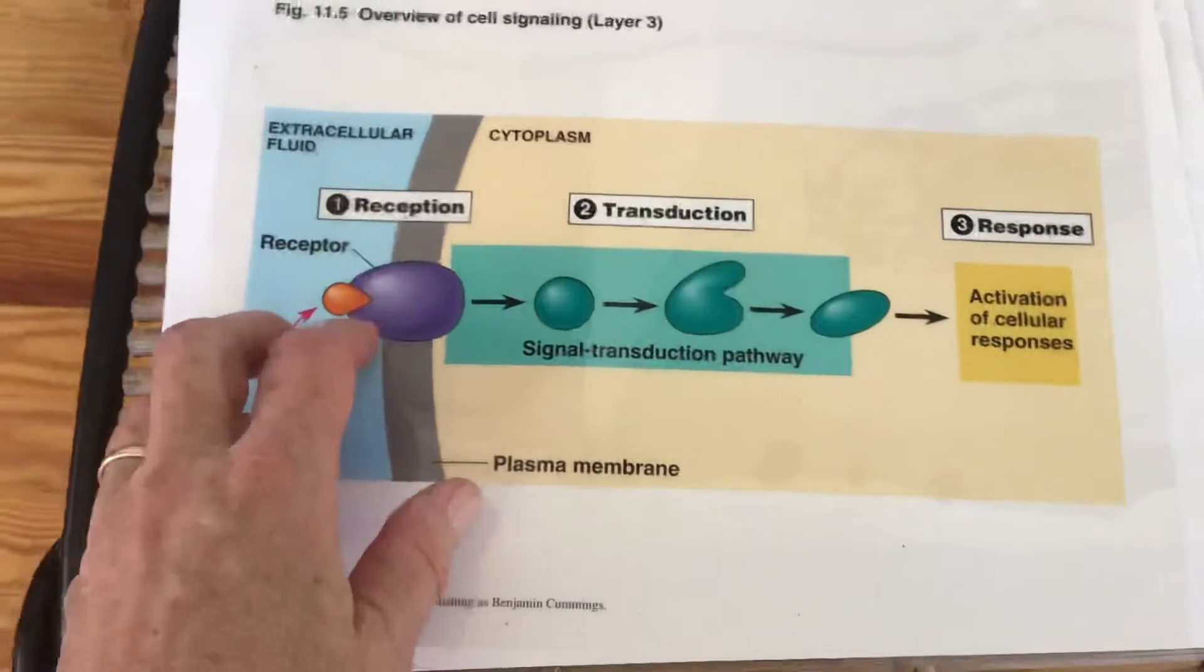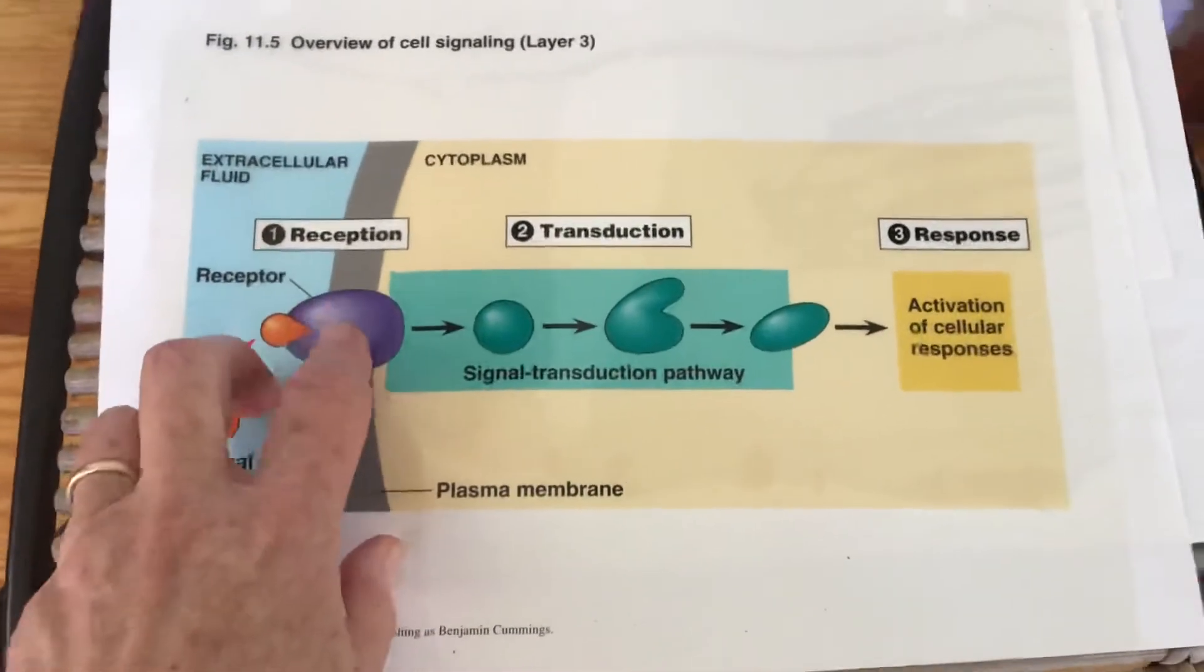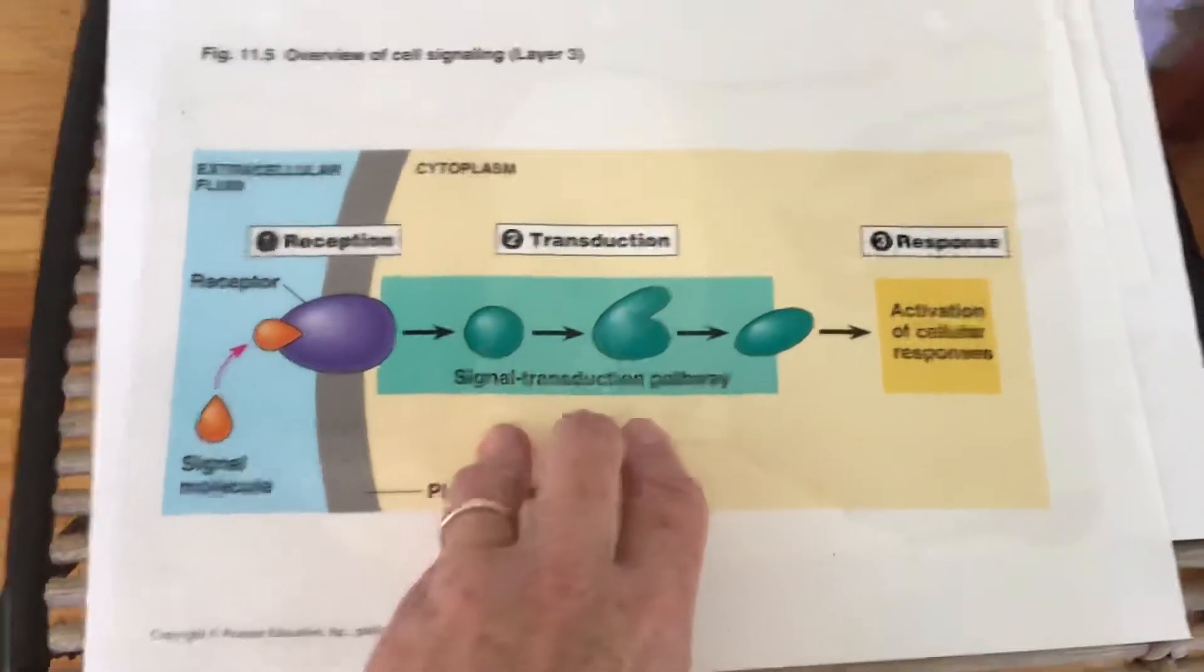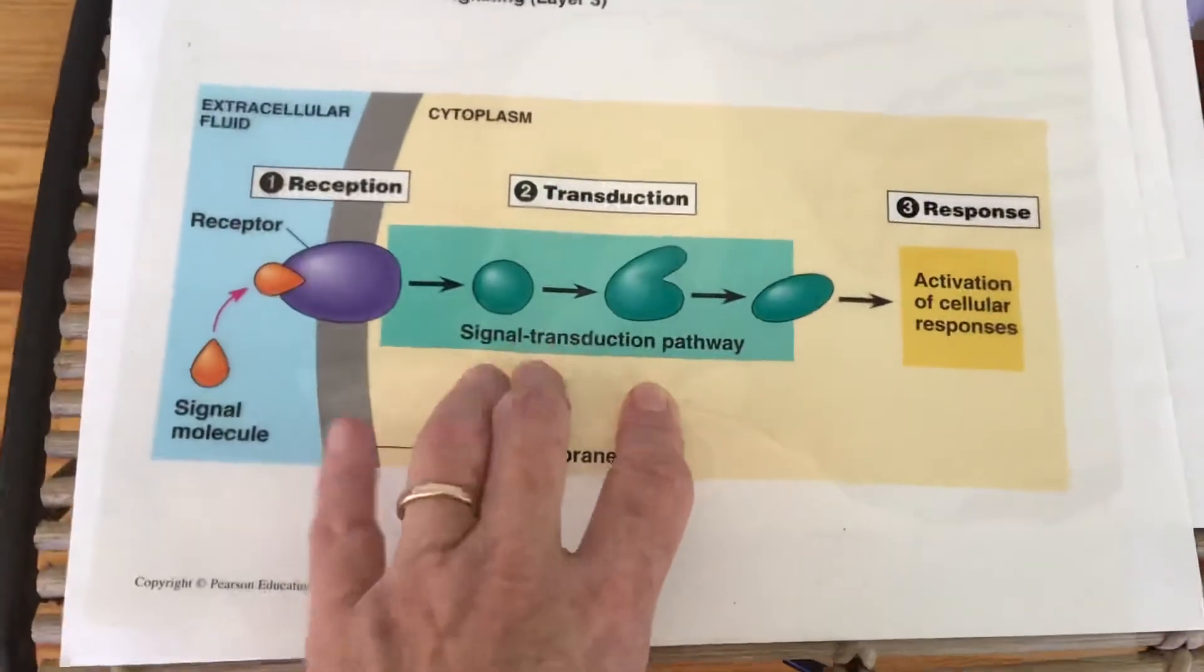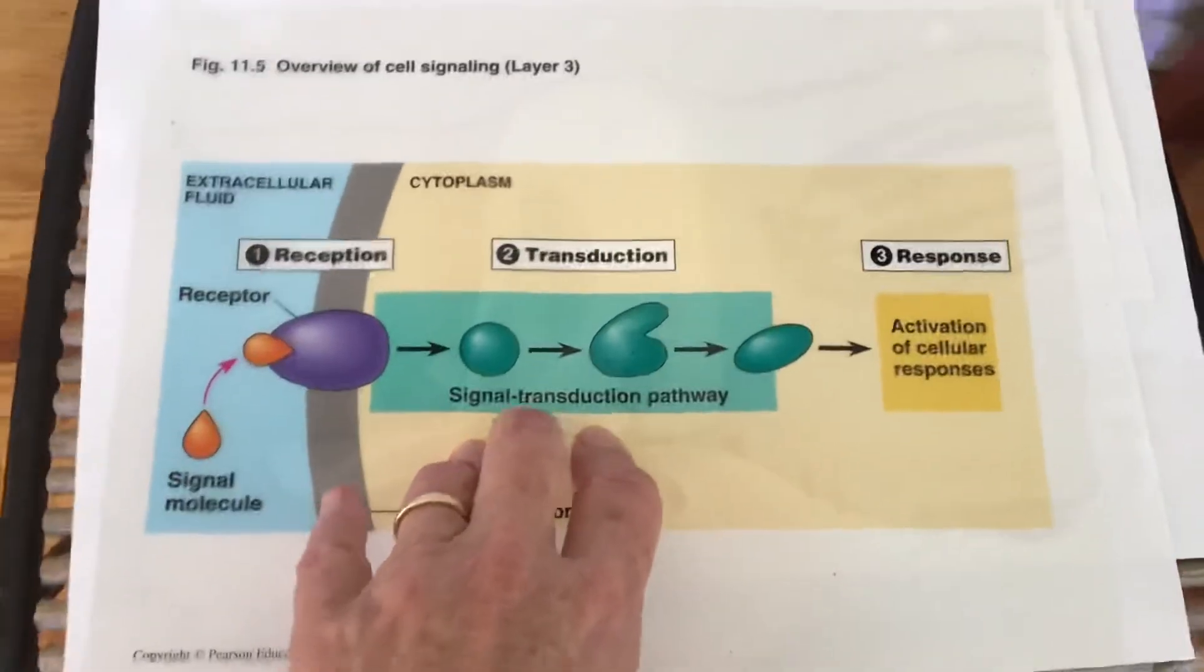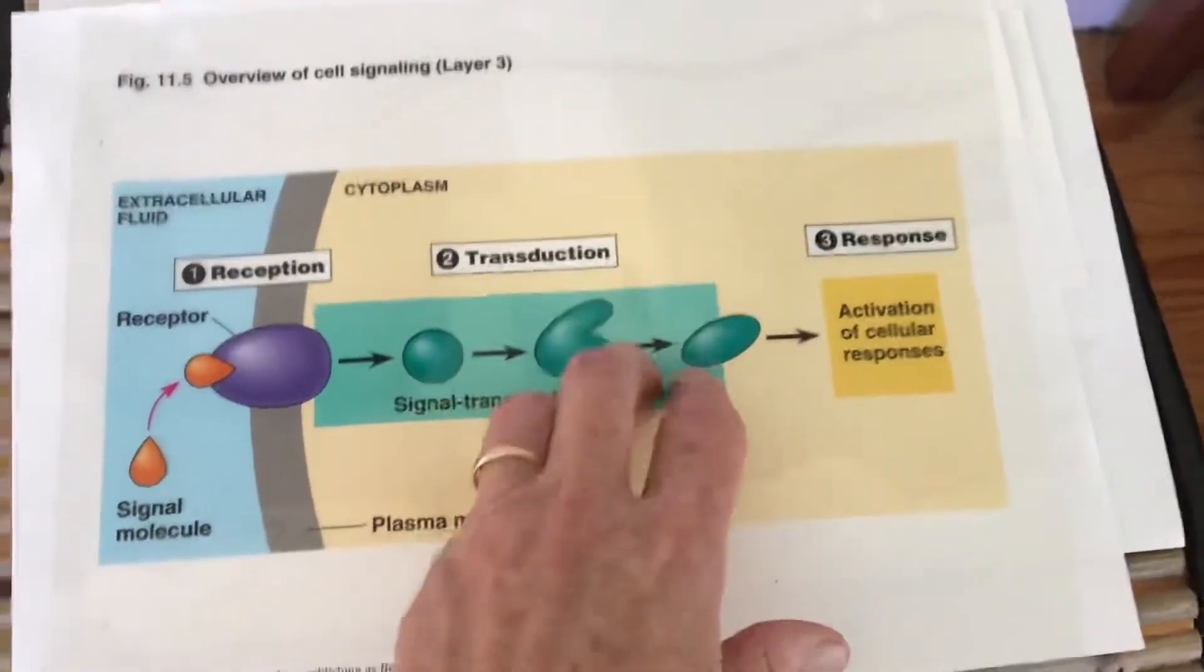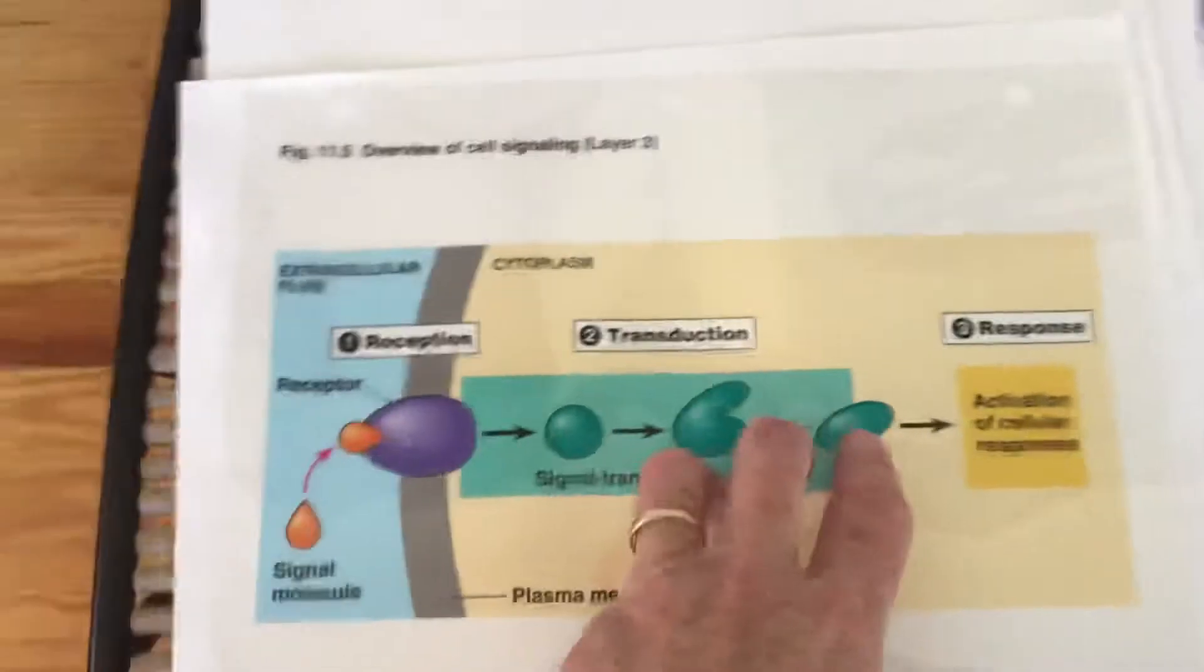Now that molecule will start a chain reaction of a pathway, a metabolic pathway that is called the signal transduction pathway. So this is many reactions that are happening that create finally a molecule that will cause a specific response in the cell.